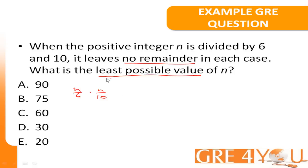Taking into account the fact that we are after the least possible value of n, this means that n is the lowest common multiple of both 6 and 10. Let's take note of the first tip of this video: identify key terms and rephrase them.